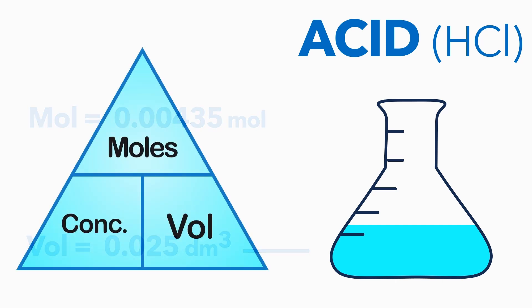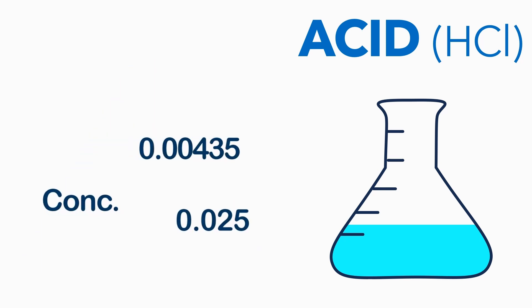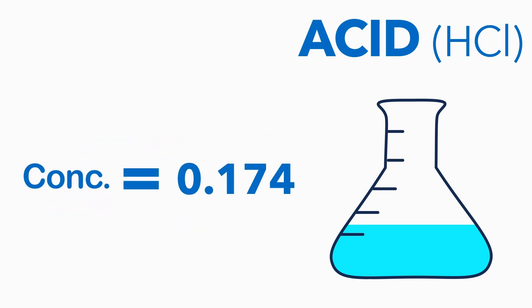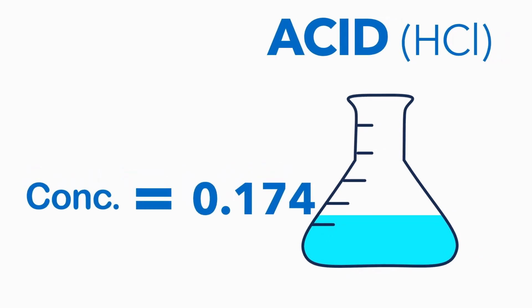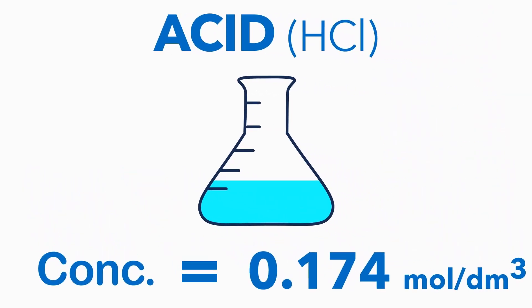And now, the concentration of the acid is simply the number of moles divided by the volume. This gives a concentration of 0.174 mol/dm³.